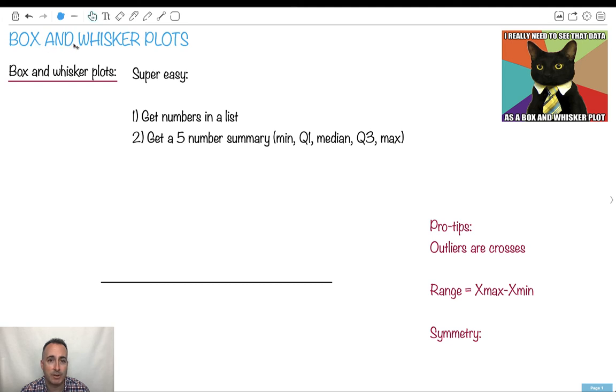We're going to talk about box and whisker plots. These are actually really easy. You just have to get all the numbers in the list and get this five-number summary. So I'll show you how to do that again in case you forgot.